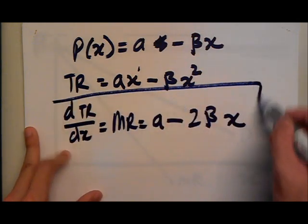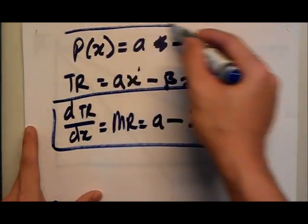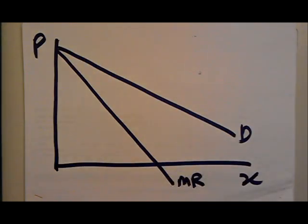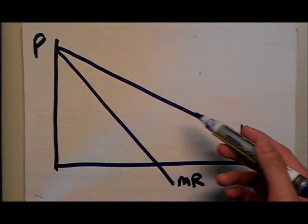Now you just compare this guy and this guy. You will notice the difference is just this 2. So the 2 basically means that my MR curve is two times steeper than my demand curve.